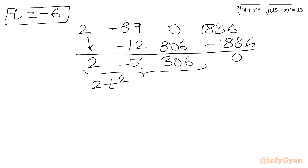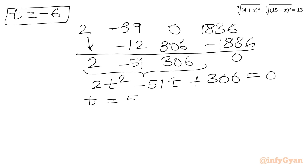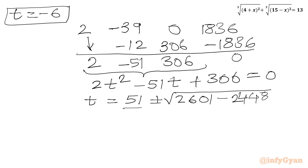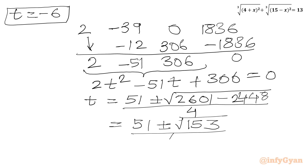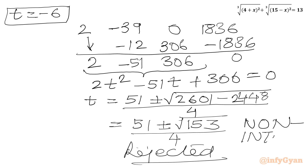The reduced equation is 2t² − 51t + 306 = 0. Using the quadratic formula: t = (51 ± √(2601 − 2448)) / 4 = (51 ± √153) / 4. Since these are irrational, non-integer roots, we reject this quadratic. So t = −6 is the accepted solution.